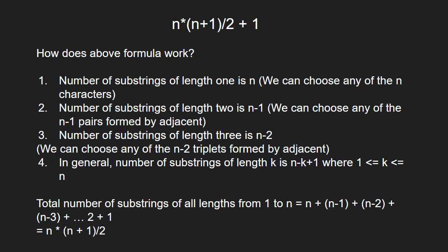We can generalize that the number of substrings of length k is n-k+1. The total number of substrings of all lengths is the summation from length 1 to n, which equals n*(n+1)/2.